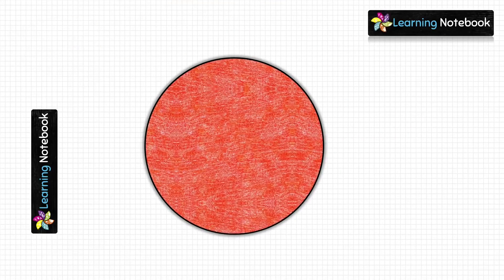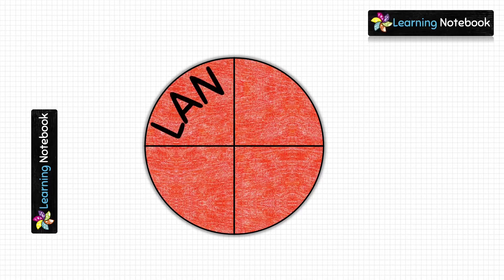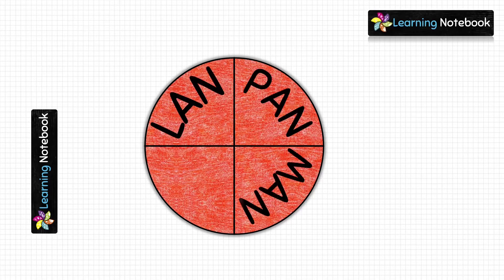Now take the red circle and fold it vertically as well as horizontally. Now let's write the four types of networks on it — LAN, PAN, MAN, and WAN.